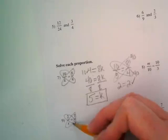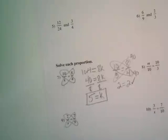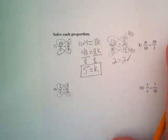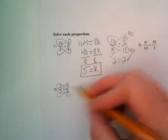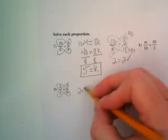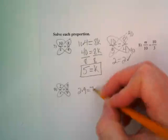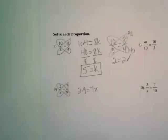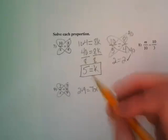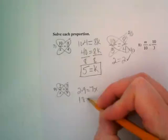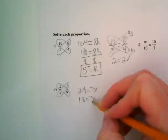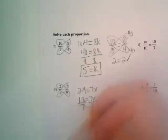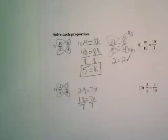We're going to pull the two things diagonally across from each other and we're going to rewrite them as an equation. 2 times 9 is equal to 7 times x. 18 is equal to 7x. We're going to divide both sides by 7 and that is not going to be a whole number, is it?